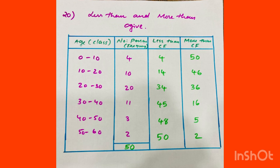For the less than and more than ogive, we build the cumulative frequency table. Adding the frequencies: 34, then 45 plus 3 is 48, 48 plus 2 is 50. That is the less than cumulative frequency value.